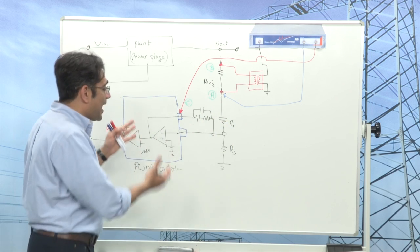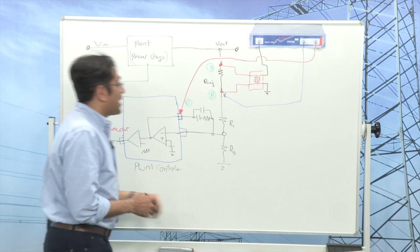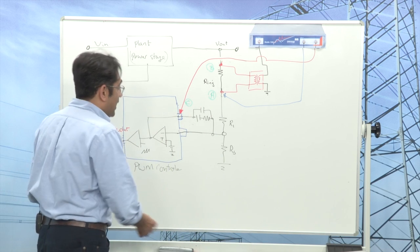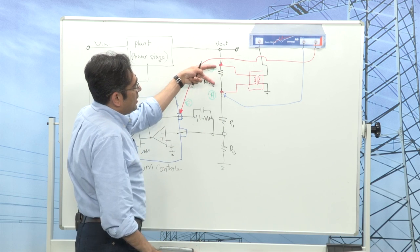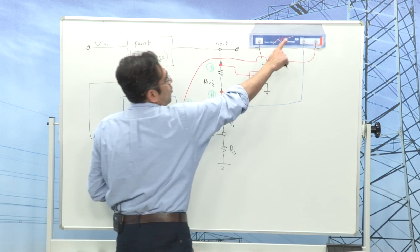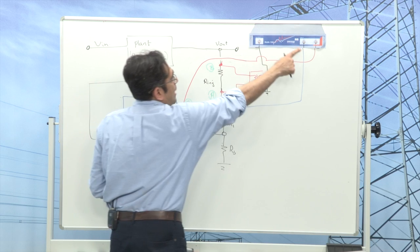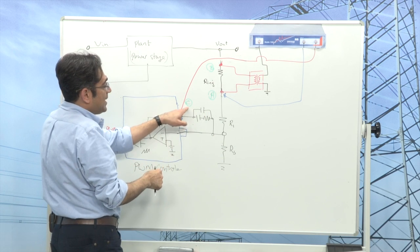So this is how we left the setup from the previous measurement which was measuring the compensator. My signal was being injected across the injection resistor, my channel 1 was connected to point A and my channel 2 was connected to point C.